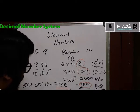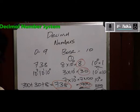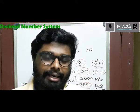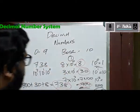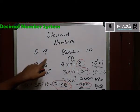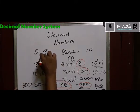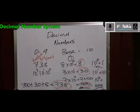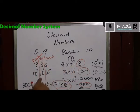That is how a decimal number works with its positional values. For decimal numbers, there are 10 digits from 0 to 9 and the base is 10. That is why we took the positional values as 10 raised to 0, 10 raised to 1, 10 raised to 2 — corresponding to the 1s place, 10s place, and 100s place, which you have already studied in math. So the values are: 8 into 10 raised to 0, 3 into 10 raised to 1, and 7 into 10 raised to 2.